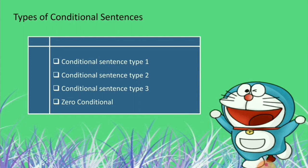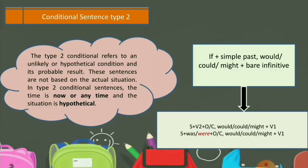Now let's review the Conditional Sentence Type 2. The Type 2 conditional refers to an unlikely or hypothetical condition and its probable result. The sentences are not based on the actual situation. In Type 2 conditional sentences, the time is now or anytime, and the situation is hypothetical.